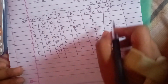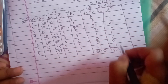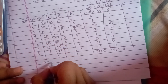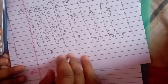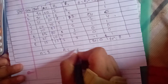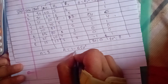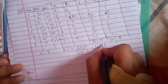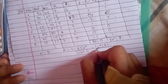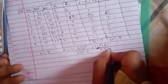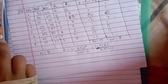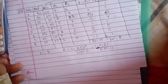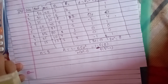Summation of D² is 8. The number of items is 8. The rank correlation is 1 minus 6 times summation of D² divided by n times (n² minus 1). Summation of D² is 8, the number of items is 8, and 8² minus 1 is 63.